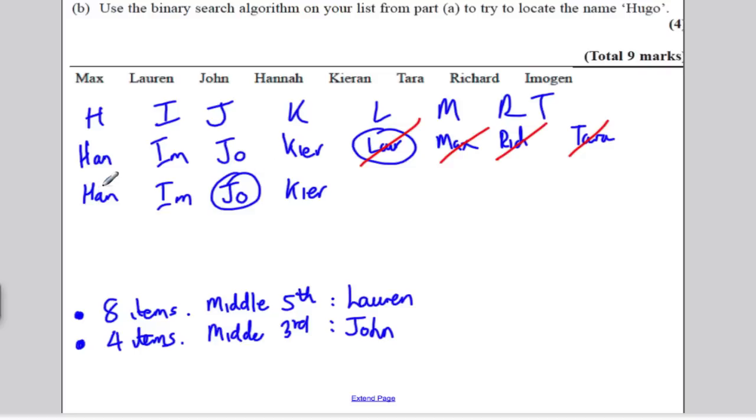So now you know that John. Again, if you're looking for Hugo, that should be before John, so you cross off John and anyone after him, and you're left with Hannah and Imogen. So you've got two items, the middle is the second, which is Imogen.